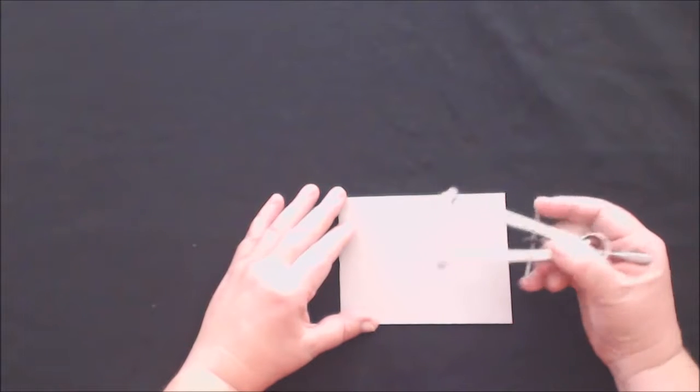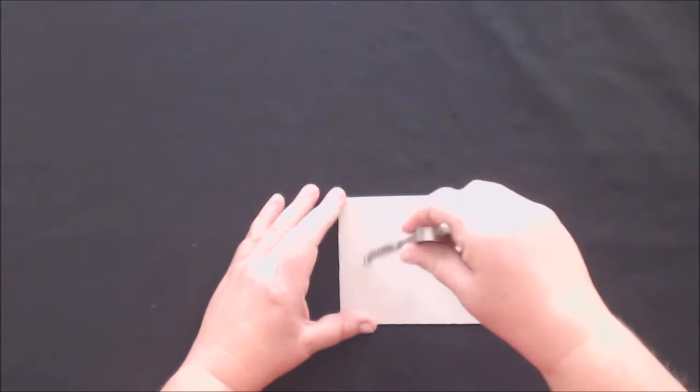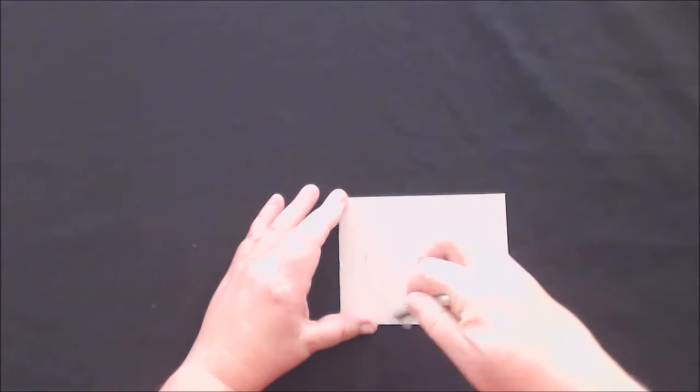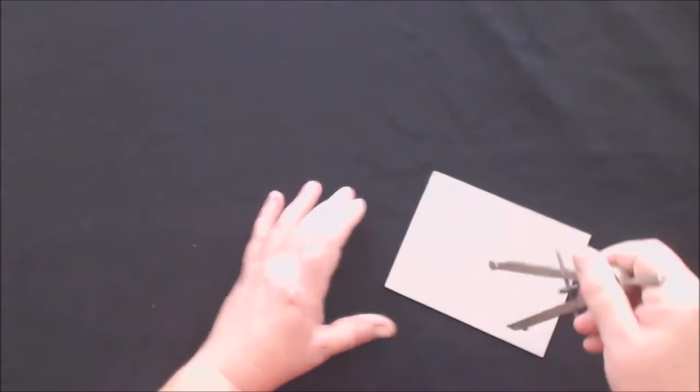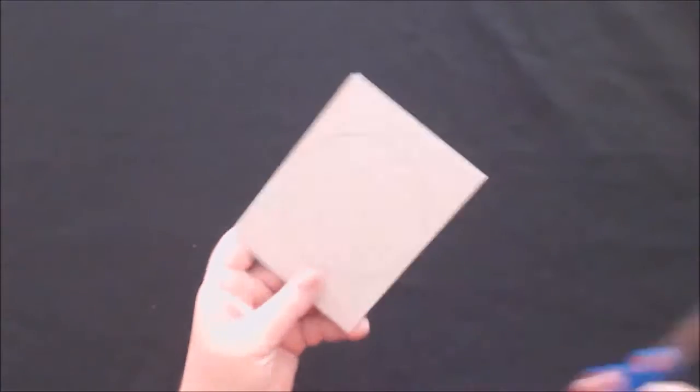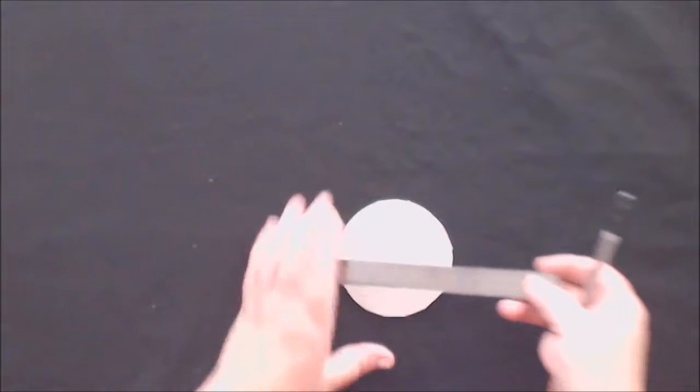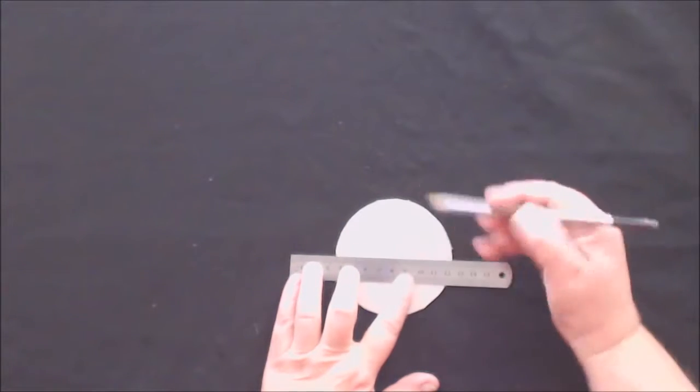Start by drawing a circle on your heavy cardstock, approximately 10 to 12 centimeters in diameter. We are making a loom to weave the friendship bracelet. Cut your circle with the scissors. Divide the circle into 8 equal pieces.